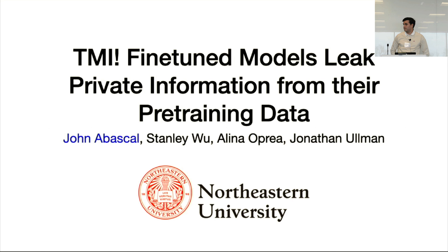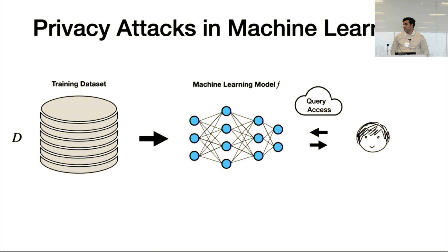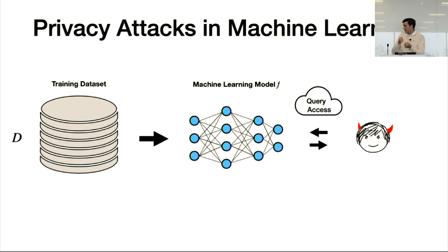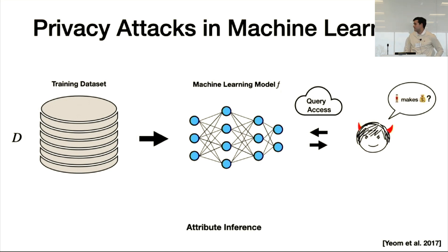Hi everyone, I'm John. Today I'm going to be talking about our work on membership inference attacks on fine-tuned machine learning models. This is joint work with my collaborator Stanley Wu, now at the University of Chicago, and our advisors at Northeastern, Aline Oprea and Jonathan Ullman. Consider a typical machine learning setting where there's some training dataset D used to train a model F, and individuals can interact with the model via query access.